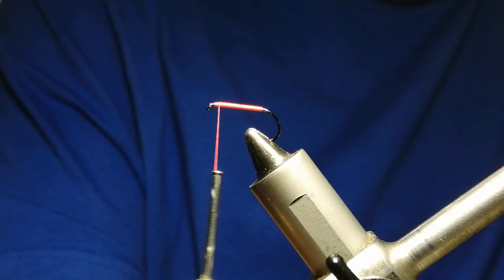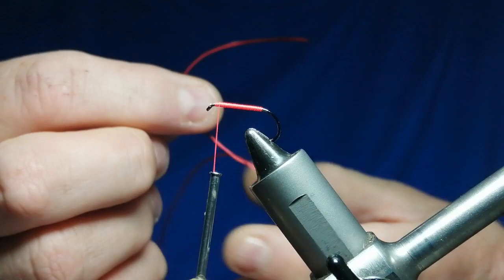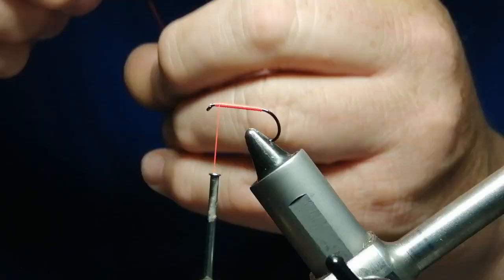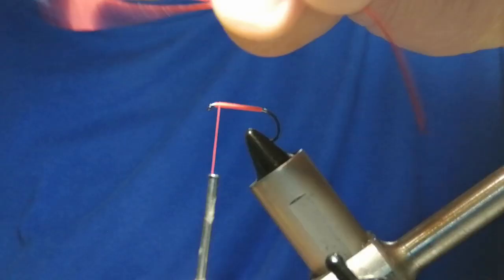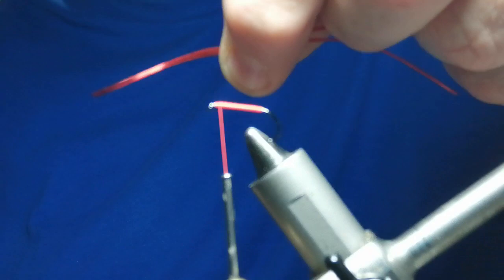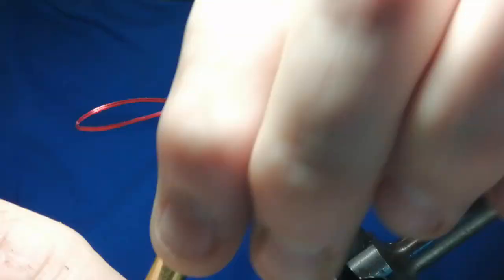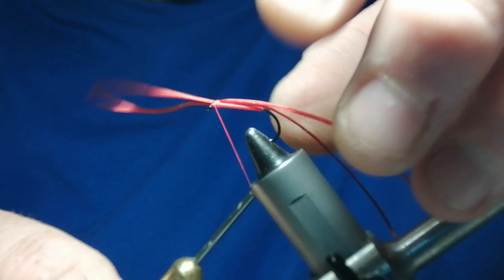Now we've cut a strand of the blood red flexi floss off which we're going to use for the legs. So what we'll do is half it, pinch all of it, and if you notice one way it goes upwards and then another way it'll point downwards. You want it so when you're tied onto the hook it goes upwards. So pinch it on, put it in position, then what I normally do is put a couple of wraps at the front and that kicks it up before I tie it down.